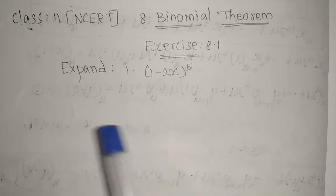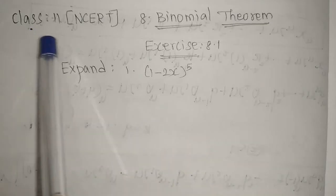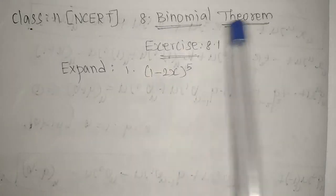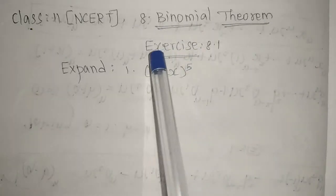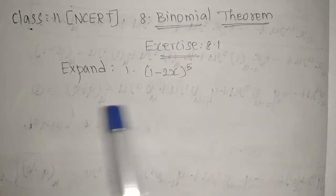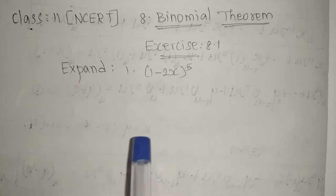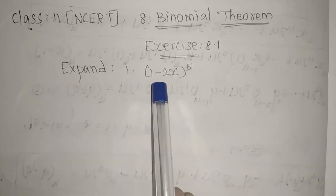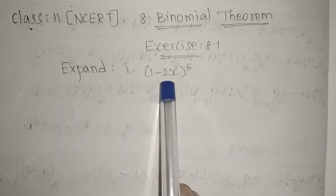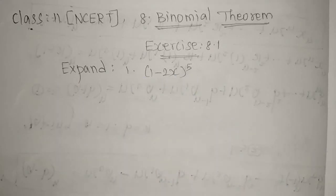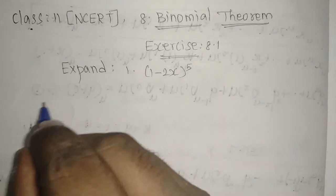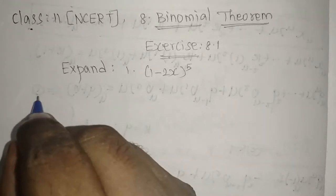Welcome to the channel. Today we will see Class 11 NCERT Chapter 8, Binomial Theorem, Exercise 8.1. Expand: (1 minus 2x) whole power 5. This is in the form of (1 minus x) whole power n.